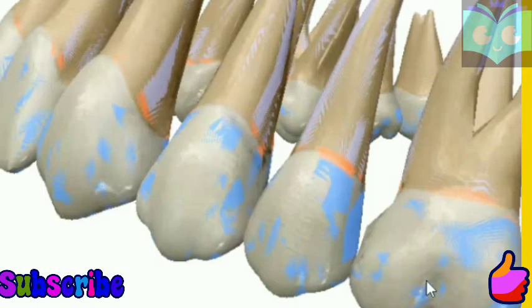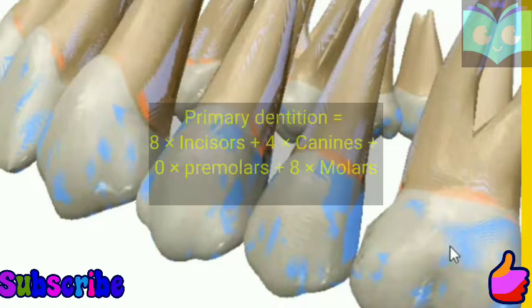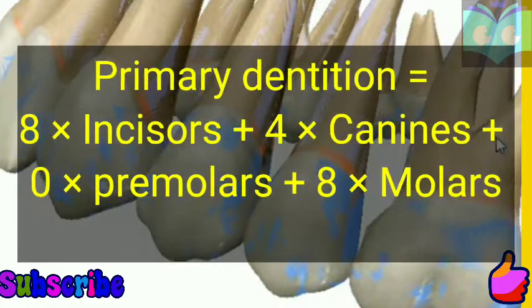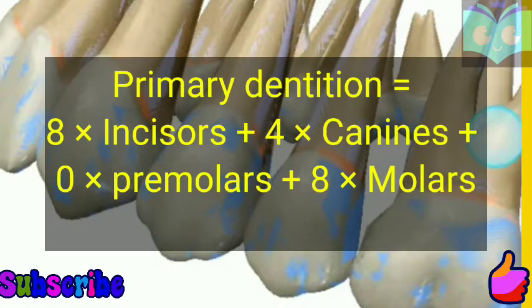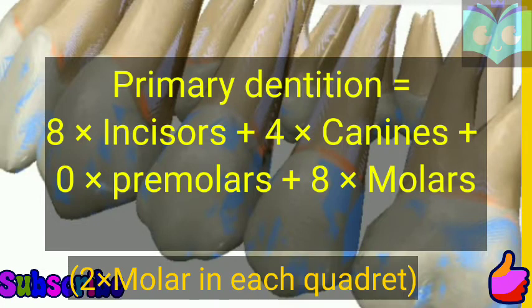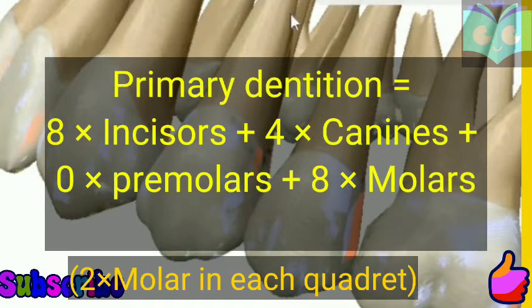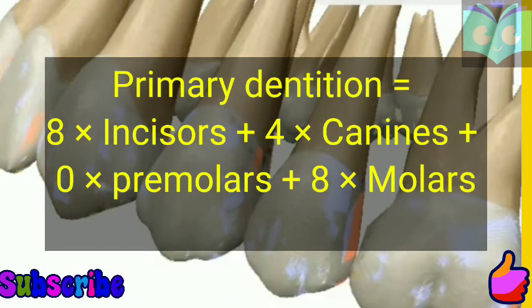Primary dentition includes a set of 20 teeth. Among them, incisors are eight and canines are four. No premolars are present, while only two molars are present in the primary dentition.